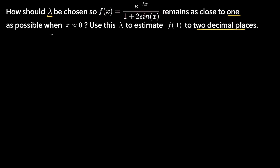Let's figure out what we need to do. We need to find a lambda value that makes this function as close to 1 as possible for x values near zero. Since we're talking about linear and quadratic approximations, that's the realm we're working in.